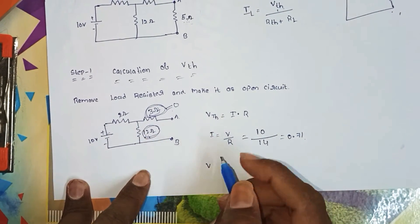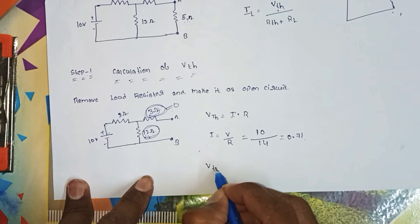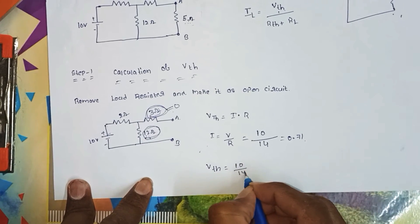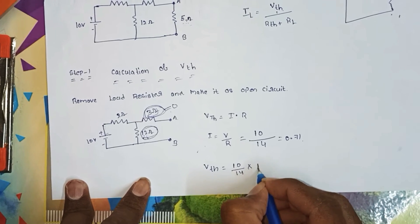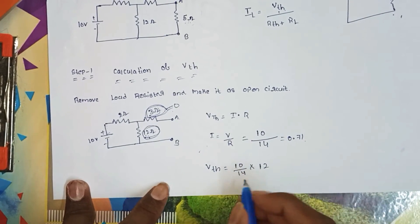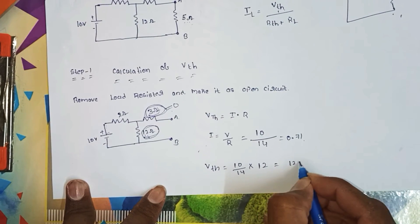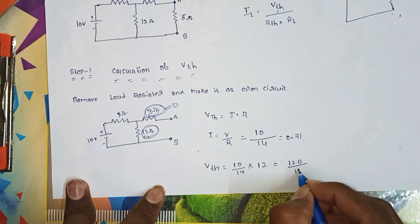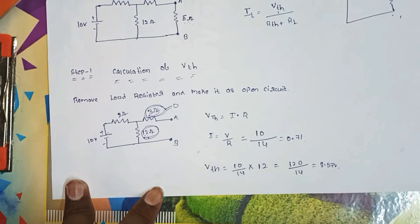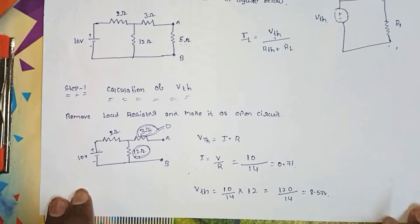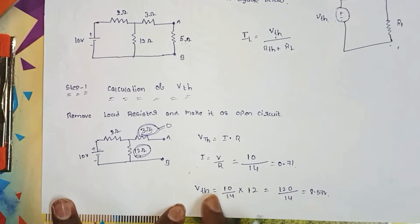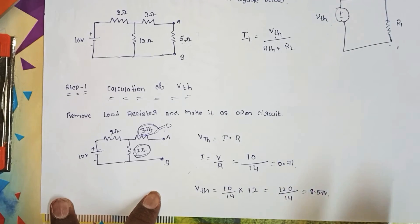The resistance equals 12 ohms, so VTH equals 10 divided by 14 multiplied by 12, which is 0.71 into 12, giving 120 divided by 14, equal to 8.57 volts. So VTH is equal to 8.57 volts.